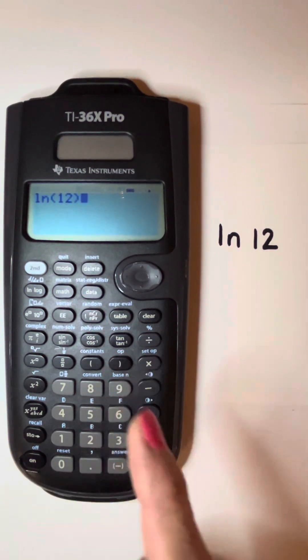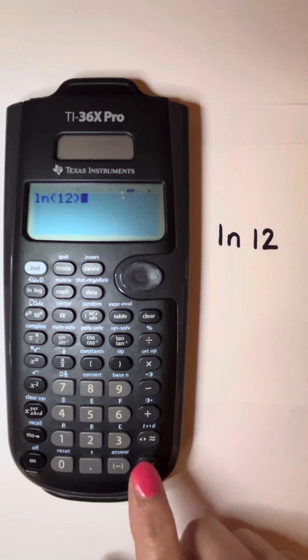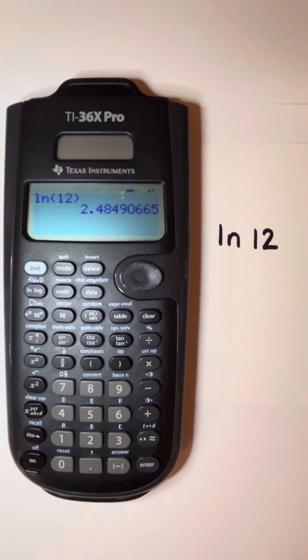You can close the parenthesis or not. If we're not doing any other operations with the logarithm, it's not necessary to close it. But I went ahead and closed it, and then we just press enter. And that gives us the natural log of 12.